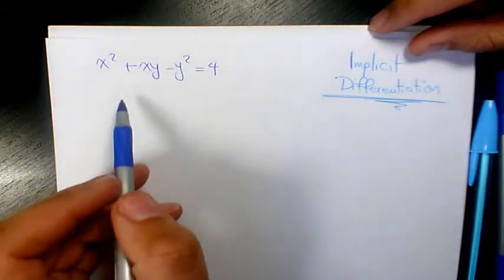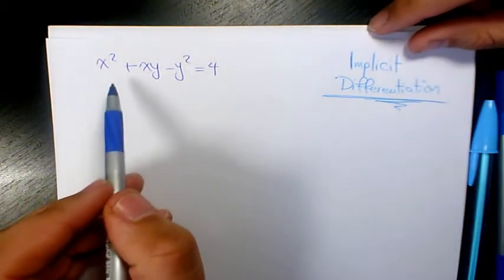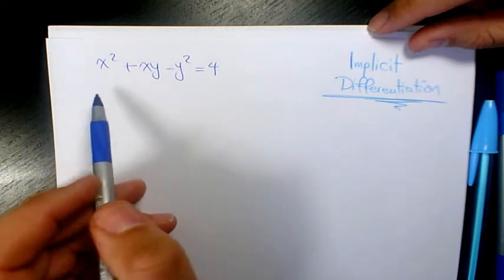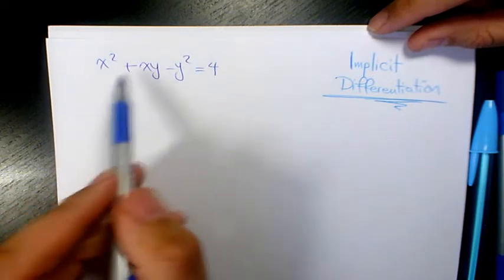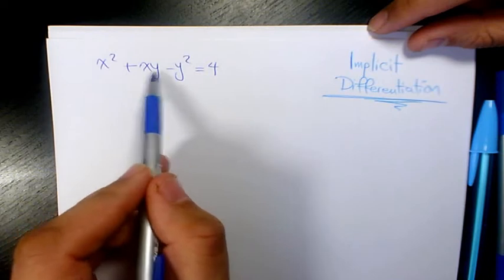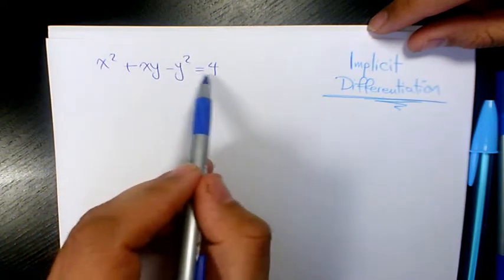What's up guys, this is Massey. Welcome to another video. In this video I want to show you how to use implicit differentiation to find the derivative of x² + xy - y² = 4.